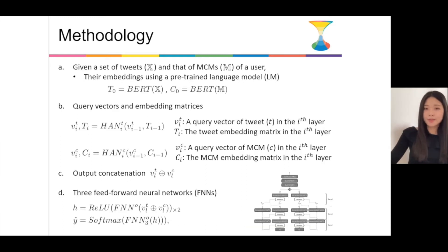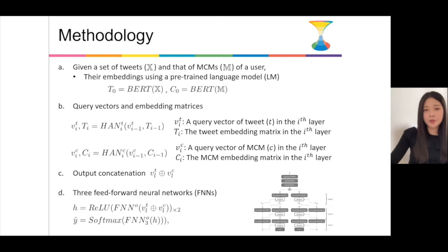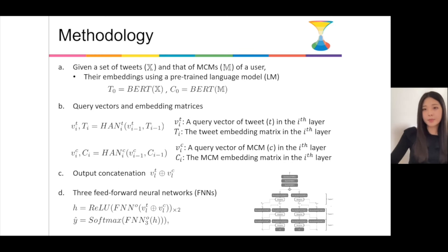Now, I'd like to describe our method for depression detection step by step. Our model takes as input a set of tweets and a set of metaphor concept mappings of a user, and then it computes their embeddings using a pre-trained language model. In our experiment, we use BERT.